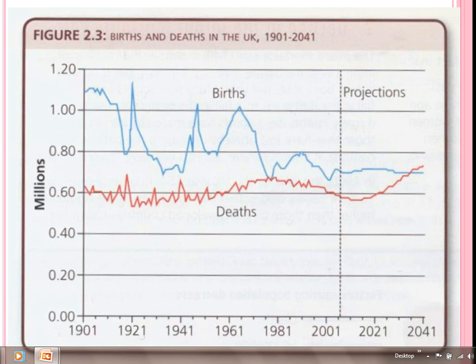This second part of the tutorial is focusing on the reasons for the decline in the number of deaths. As you can see, the overall number of deaths is remaining pretty constant at around 600,000 per year. But when we talk about the death rate, the death rate is falling. The death rate is the number of deaths per thousand of the population per year. In 1900, the death rate stood at around 19 per thousand, whereas by 2007 it's almost halved to 10.